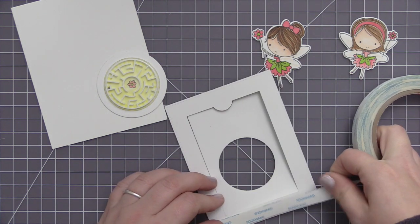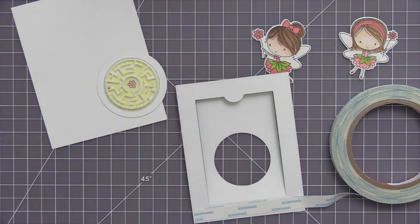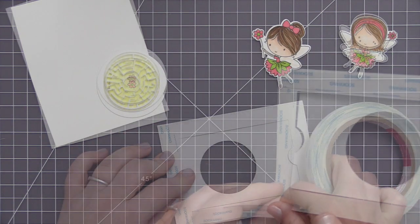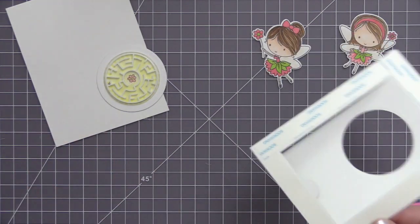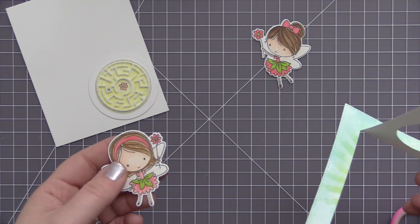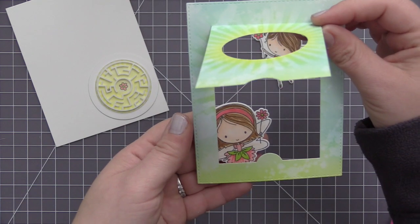So for the back area of the panel here that we're going to add, we're only going to put adhesive around the outside edge. We don't want any adhesive on that flap there, because if we do then it's going to prevent the flap from being able to open and close.